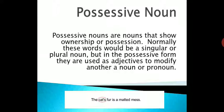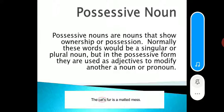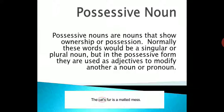These words can be singular or plural nouns, but in possessive form they are used as adjectives to modify another noun or pronoun. For example, 'the cat's fur is a matted mess' — whose fur? Cat's fur. We show possession with an apostrophe. With singular nouns not ending in S, use apostrophe and S. When the word ends with S, use only an apostrophe.